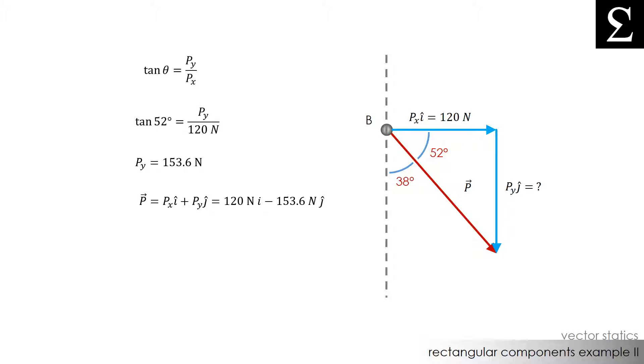Alright, so the last thing we need to figure out is the magnitude of force P. Well, we already know the magnitude of the components Px and Py. Since these components are orthogonal to one another and form a right triangle with force P, we can find the magnitude of P by taking the root sum square of the components Px and Py.